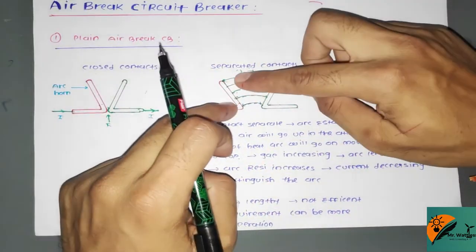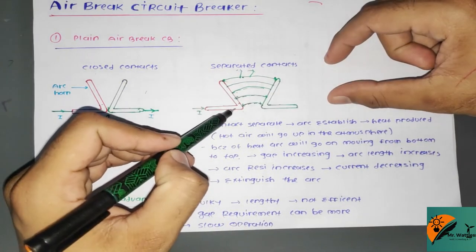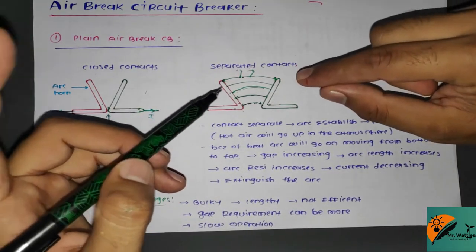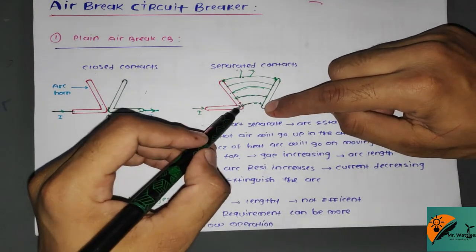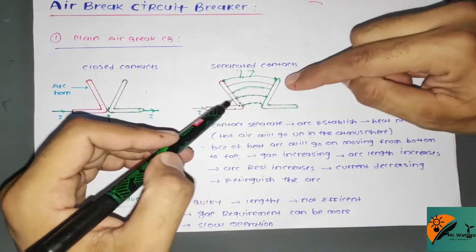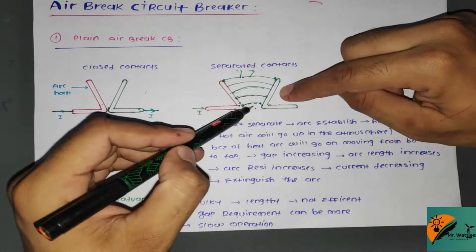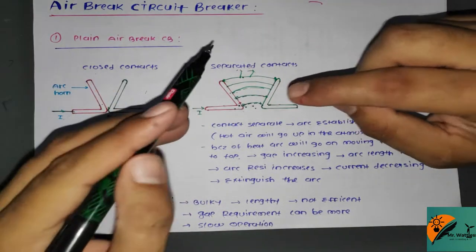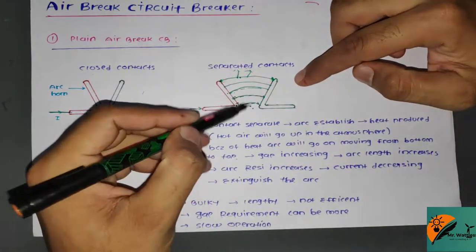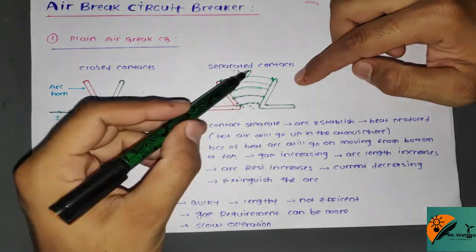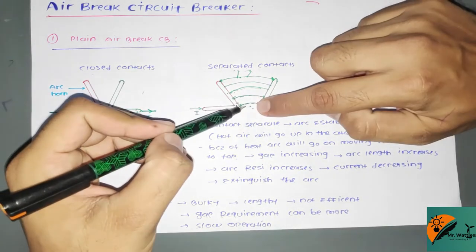When the contacts get separated, an arc is established between them, and heat is produced. We know heat is produced because of the high magnitude of current. Because of this heat, hot gases always rise upward into the atmosphere. So because of heat, the arc will go on moving from bottom to top, and the gap will keep increasing.